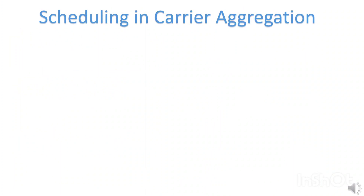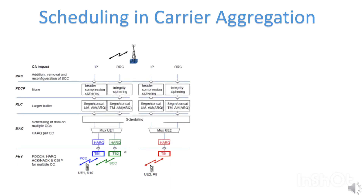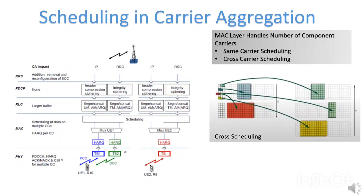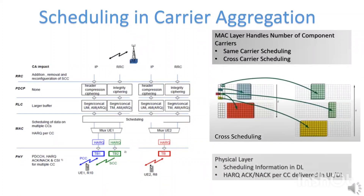Now let's talk about scheduling. Carrier aggregation introduces new messages in protocol layers, which includes some RRC messages to handle secondary component cells. There are two main scheduling alternatives. First is at the MAC layer, which is same-carrier scheduling, where resources are scheduled on the same carrier as the grant is received. The other is cross-carrier scheduling, which was primarily developed to support heterogeneous networks where inter-cell interference is significant because of networks deployed on the same frequency. Cross-scheduling reduces interference as it protects only one component carrier, which is used to allocate resources on other component carriers. In the physical layer, signaling information about scheduling on component carriers must be provided in the downlink.